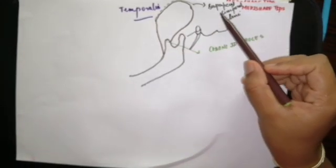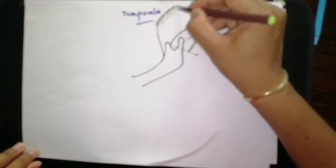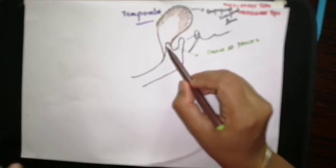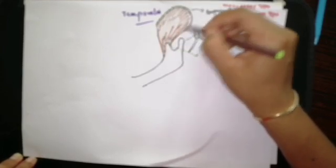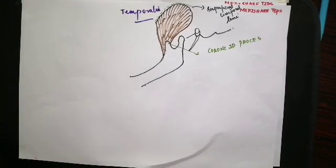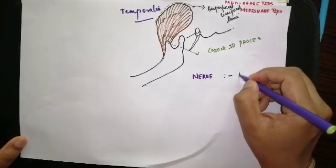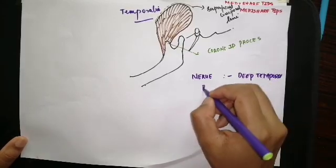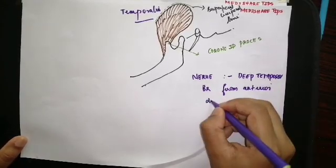This muscle originates from the temporal fossa and also from the temporal fascia. It gets inserted into the margins and deep surfaces of the coronoid process. The nerve supply is deep temporal branches from the anterior division of the mandibular nerve.